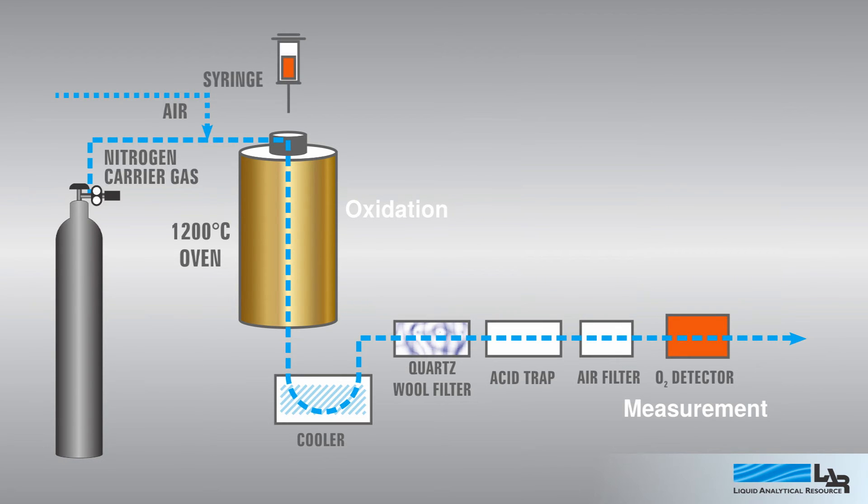A precision syringe is used to introduce a precise amount of sample into the furnace, where it instantly combusts, depleting the oxygen until no oxidizable compounds remain.